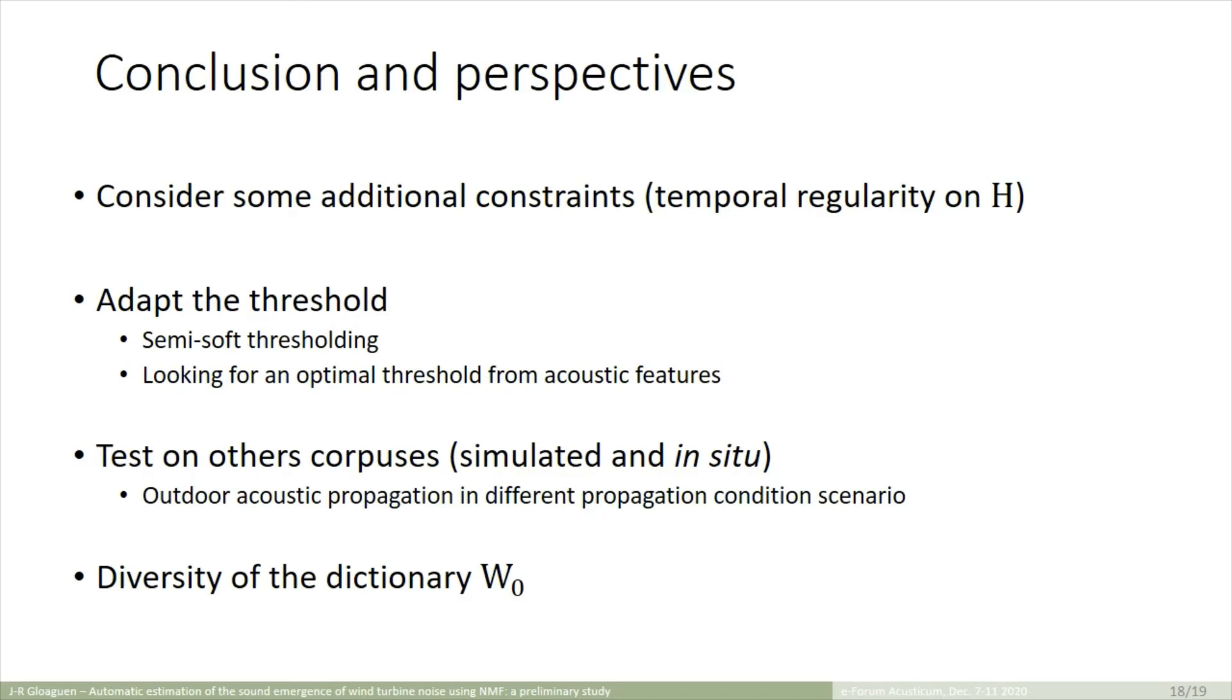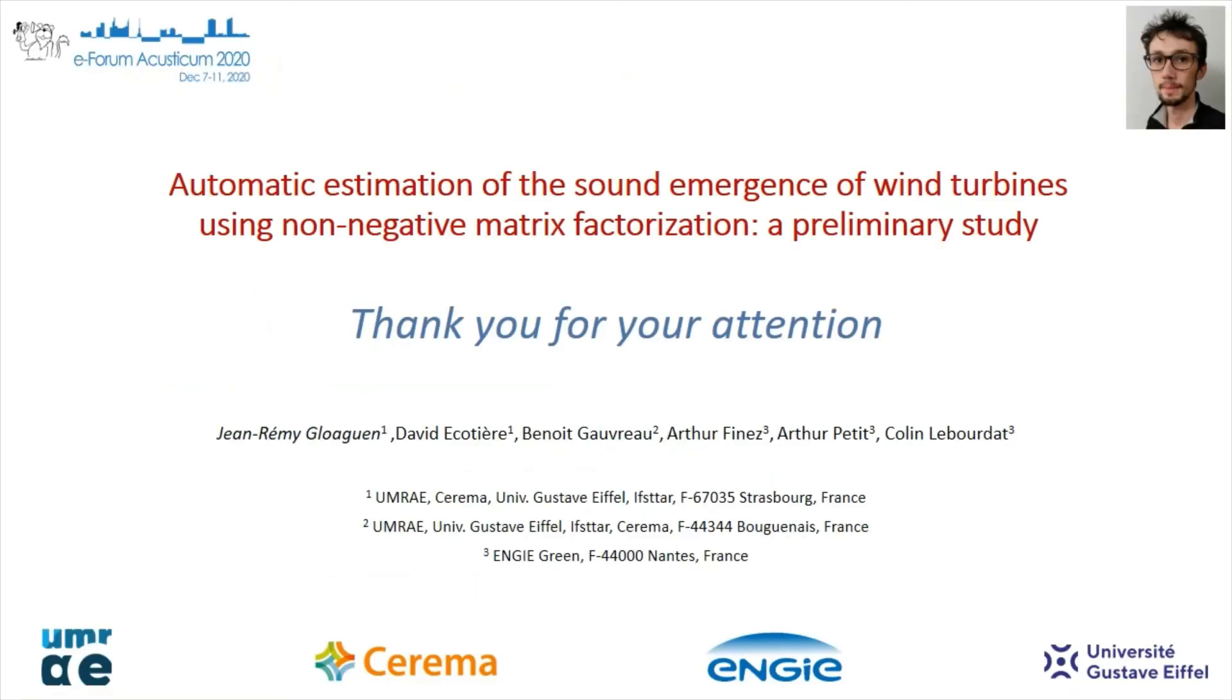And, we are looking now at different approaches to improve these results, such as adding constraint on activation, or considering two threshold values to be more adaptive, for instance. Finally, of course, we need to test this method on more complex and more complete corpuses, taking into account for instance propagation effects in the scene and in NMF. And also, we have to investigate the composition of the dictionary and its robustness of its shape for different wind farms. Thank you for your attention.